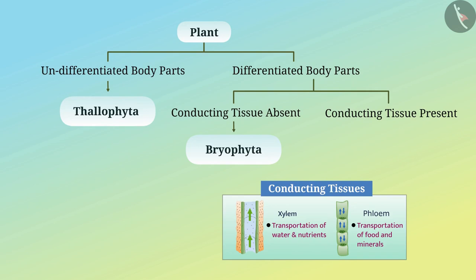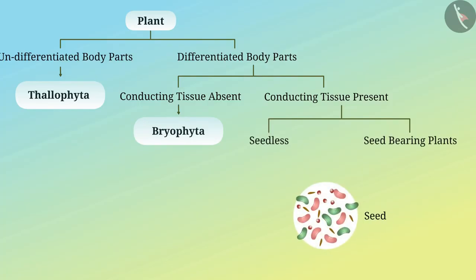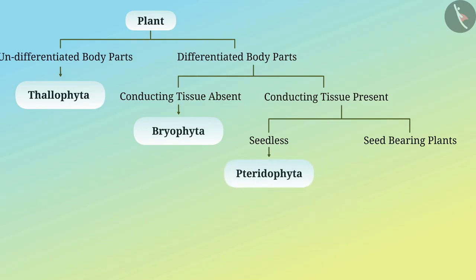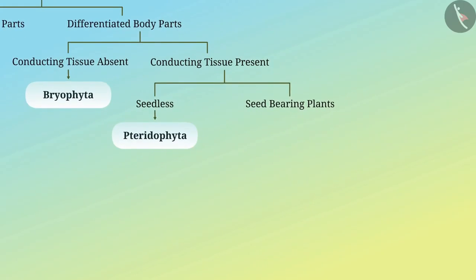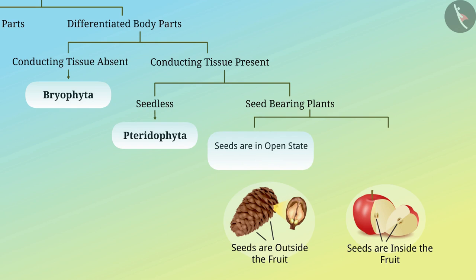Plants that have tissues for conduction are classified based on their ability to hold seeds. Seedless plants are placed in the subclass Pteridophyta. Seed-producing plants are then classified on the basis of whether the seed is inside or outside the fruit. Plants whose seeds grow outside the fruit — in an open state — are called gymnosperms.